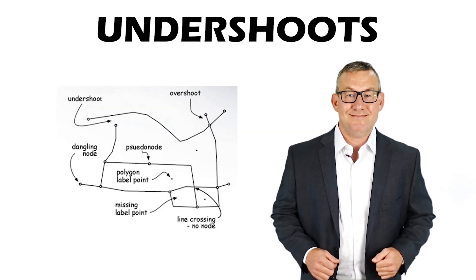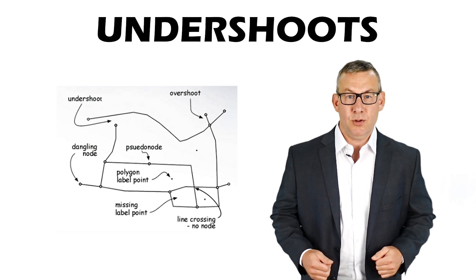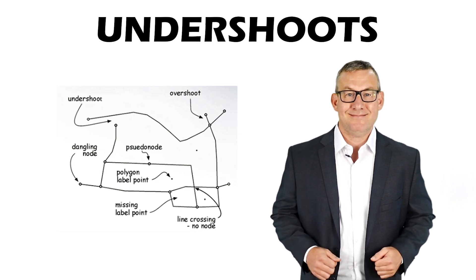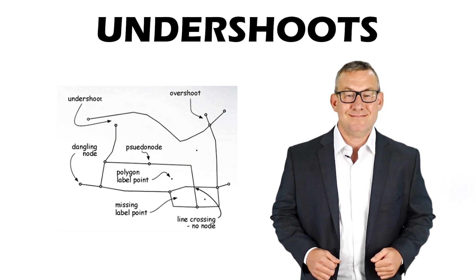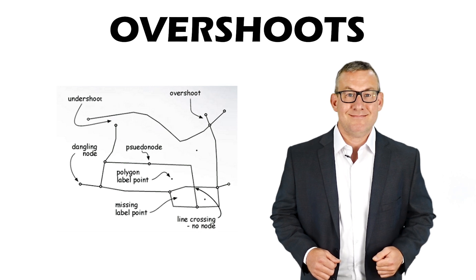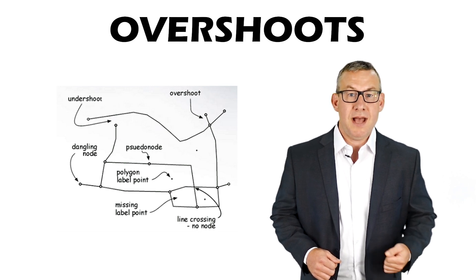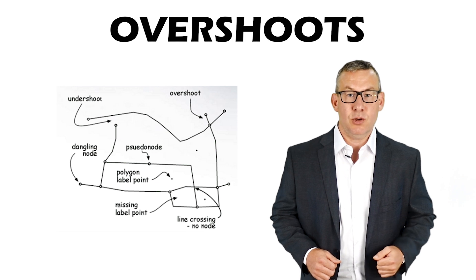Undershoots are nodes that fall short of the intended location. Overshoots are nodes that extend past the intended location.